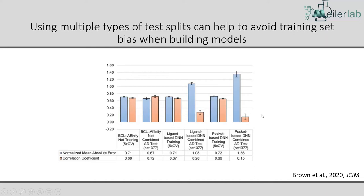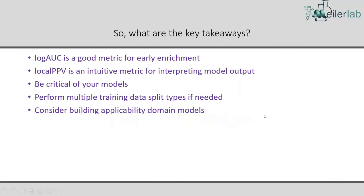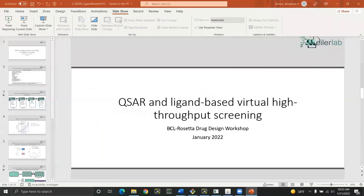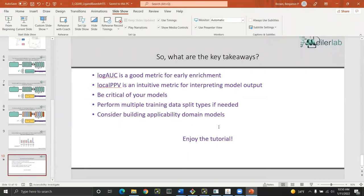The key takeaways: we use log AUC for early enrichment, and local PPV because it creates a very intuitive probabilistic interpretation of model output. Be critical of your models and think carefully about how to do validation and applicability domain analysis.